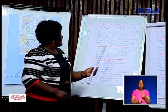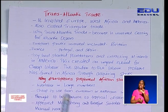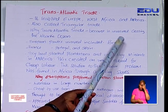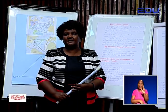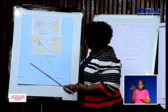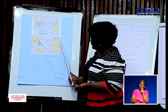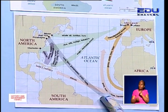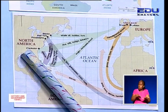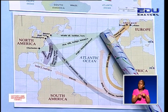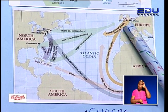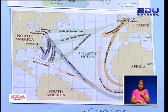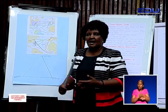Why was this trade called transatlantic trade? It was a trade that involved crossing the Atlantic Ocean. From Africa, they crossed the Atlantic Ocean to America or North America, then crossed the same ocean moving towards Europe, and from Europe they came back through the same ocean to Africa. That's why we call it transatlantic trade — because it crossed the Atlantic Ocean.